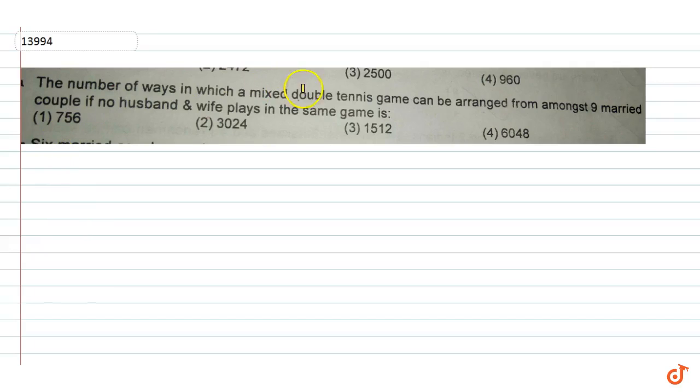The number of ways in which a mixed double tennis game can be arranged from among nine married couples if no husband and wife plays in the same game. So we have nine couples. Let's mark the nine couples.